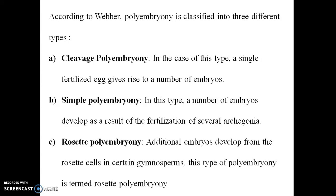Based on classification, there are three types. First, cleavage polyembryony, where a single fertilized egg cleaves to form a number of embryos. Second, simple polyembryony, where embryos develop as a result of fertilization of several archegonia.